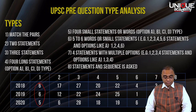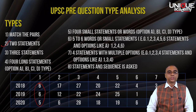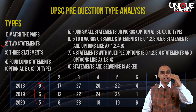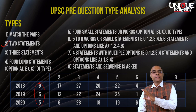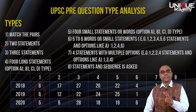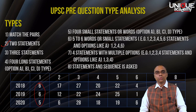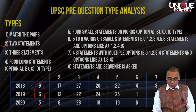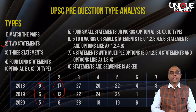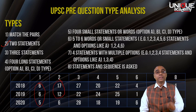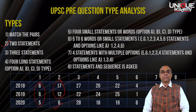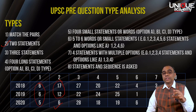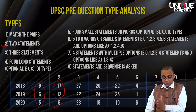The second type is Two-Statement questions, where UPSC gives you two statements and asks which statement is correct — only one, only two, both, or neither one nor two. In 2018 and 2019 there were around 12 to 17 questions of this type, but in 2020 these questions were reduced — UPSC asked just six questions of this type, meaning UPSC is relatively reducing this type.